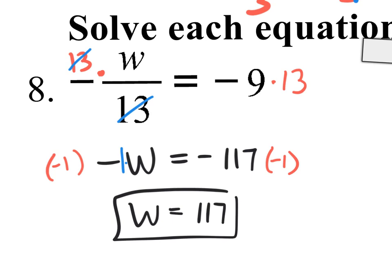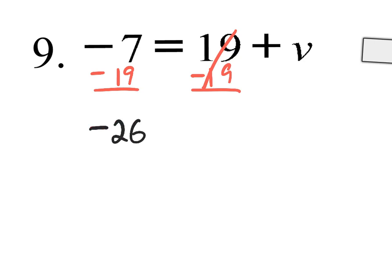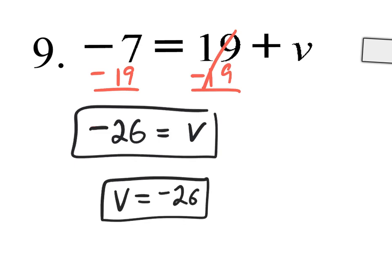That is your final answer for number 8. Number 9 — again, it's simplified. You don't have to do any distributive property or combining like terms. Your goal is to get V by itself on one side of the equal sign. V is on the right side, so let's get rid of the 19 by subtracting 19. What you do to one side, you do to the other. You owe $7 and you owe $19, so you owe $26. The equal sign comes down, V comes down. V equals negative 26. Write it with V on the left side and negative 26 on the right side. We are done.